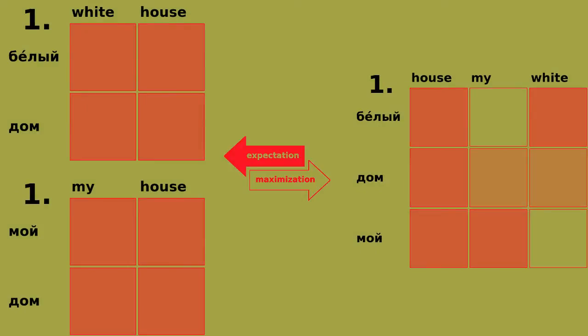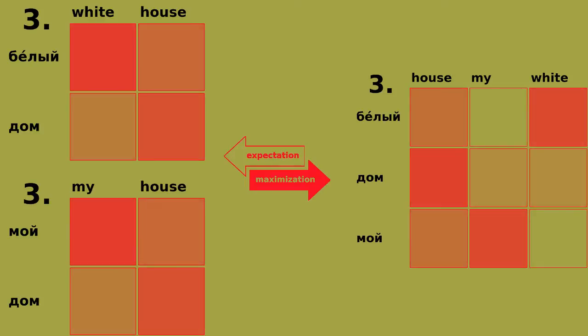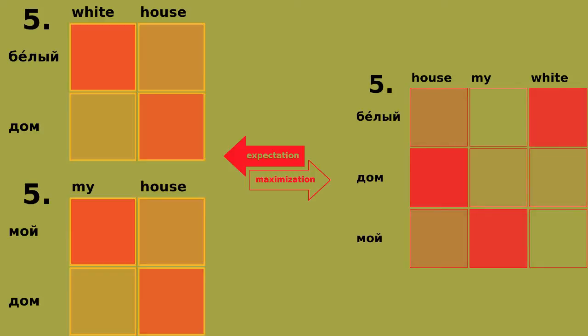In a fast-forward visualization, you'll see the lexical probabilities in the dictionary as well as the alignment probabilities in the corpus gradually sharpening.